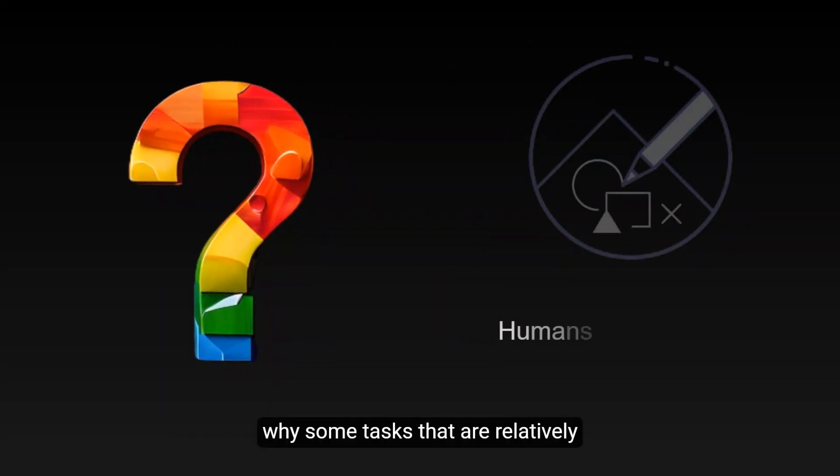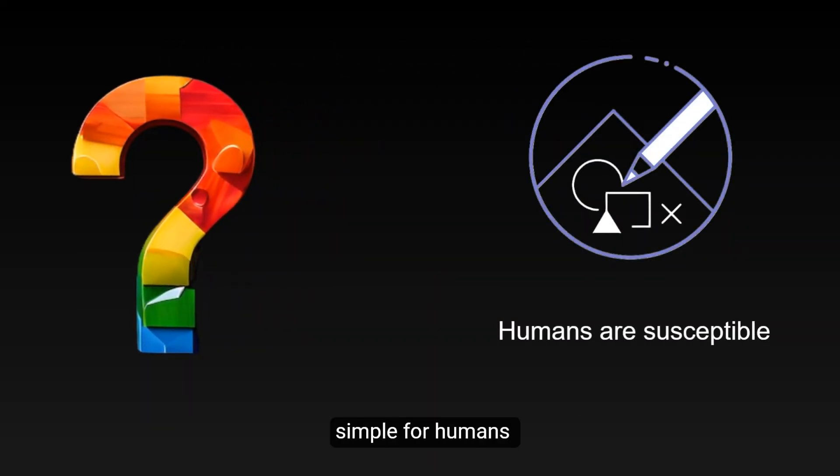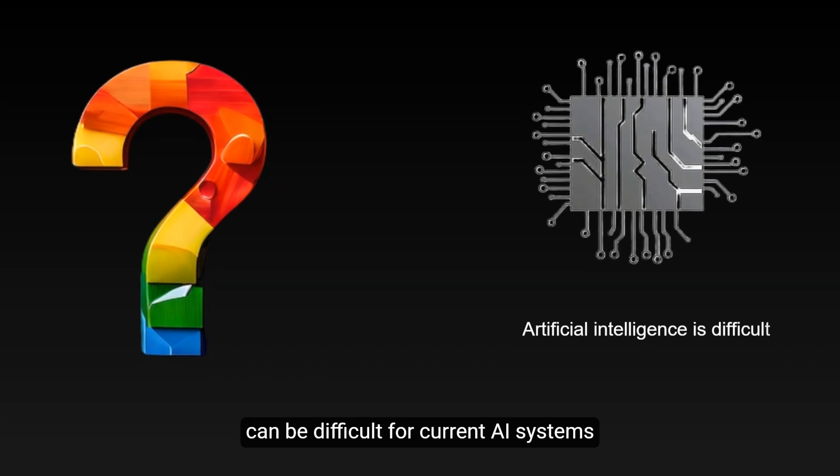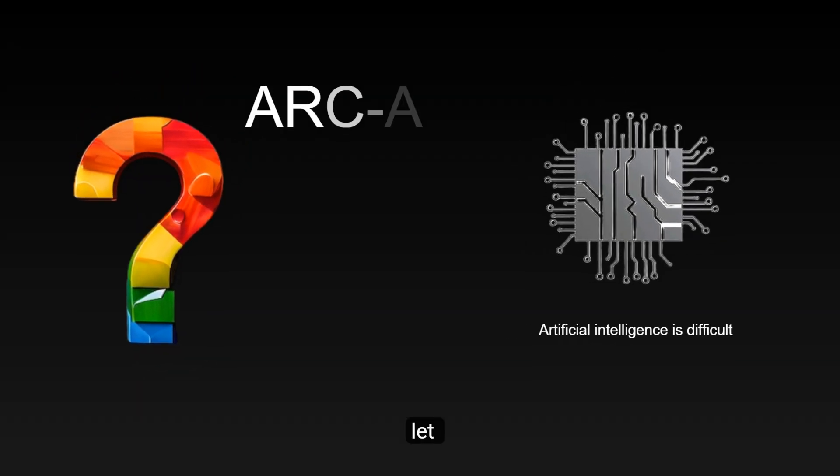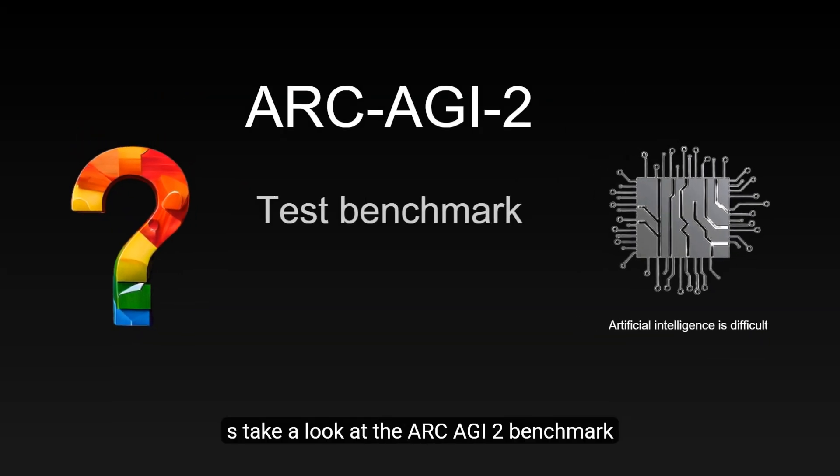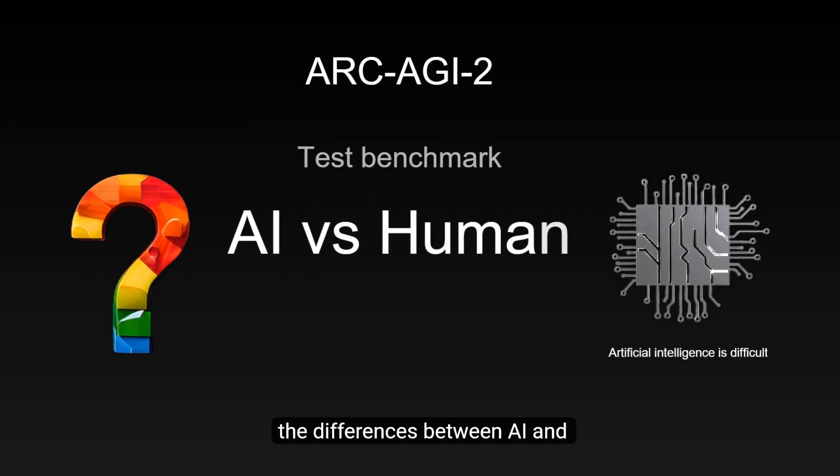Have you ever thought about why some tasks that are relatively simple for humans can be difficult for current AI systems? Today, let's take a look at the ARC AGI-2 benchmark and see how it helps us understand the differences between AI and human intelligence.